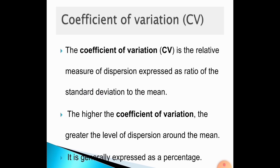Coefficient of variation is a relative measure of dispersion expressed as a ratio of the standard deviation to the mean. The higher the coefficient of variation, the greater the level of dispersion around the mean. It is generally expressed as a percentage.